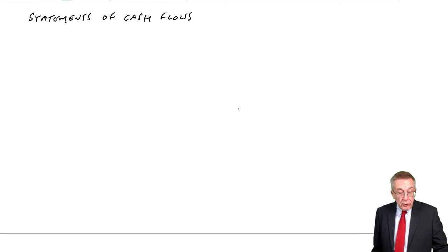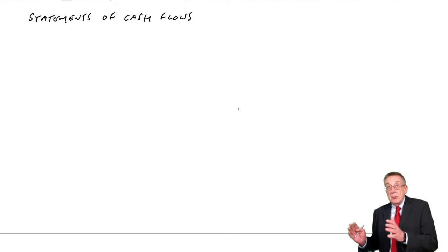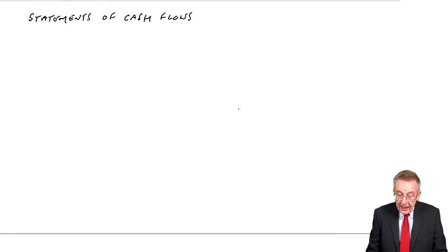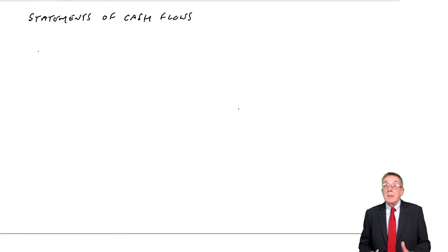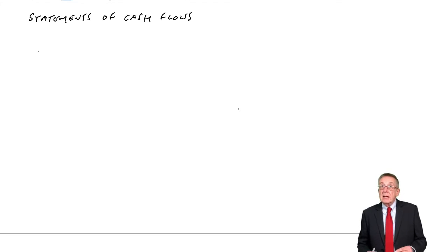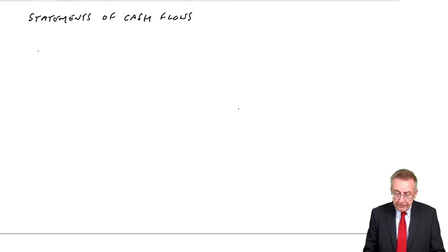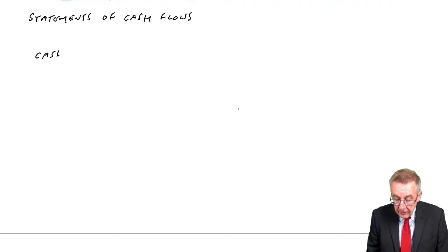There are three main headings. We're showing the cash received and the cash paid. Do learn the three headings, and basically what we're looking at under each heading — what they mean. The first heading you can see is cash flows from operating activities.